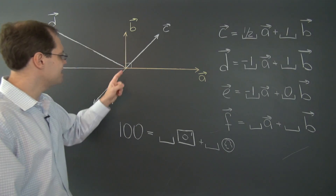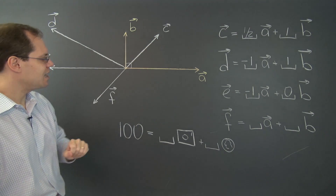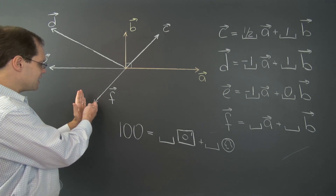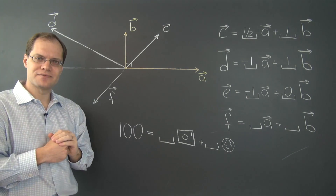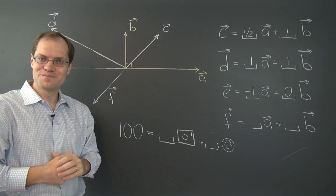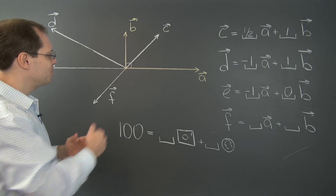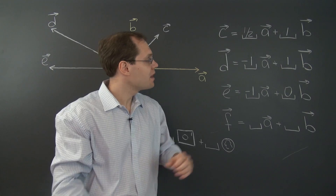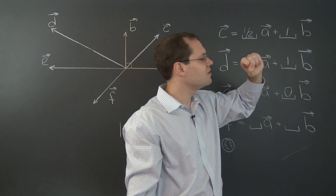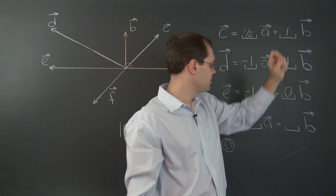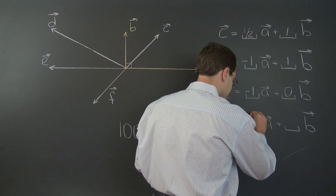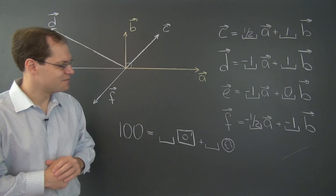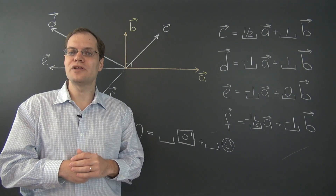Vector F is easily seen to be opposite of C. Had we not done C first, this would take a moment of trial and error, but now that we know C, we simply recognize that F is the opposite. Since C is one-half A plus B, then F must be minus one-half A minus B, which we write with coefficients minus one-half and minus one.